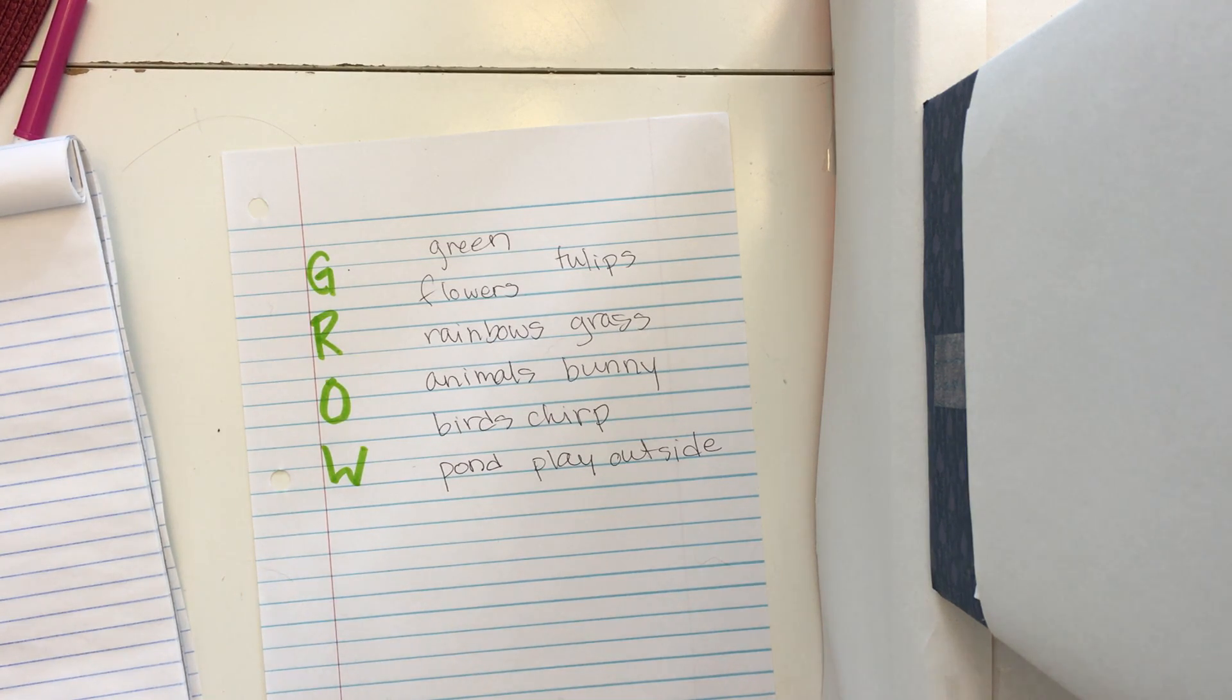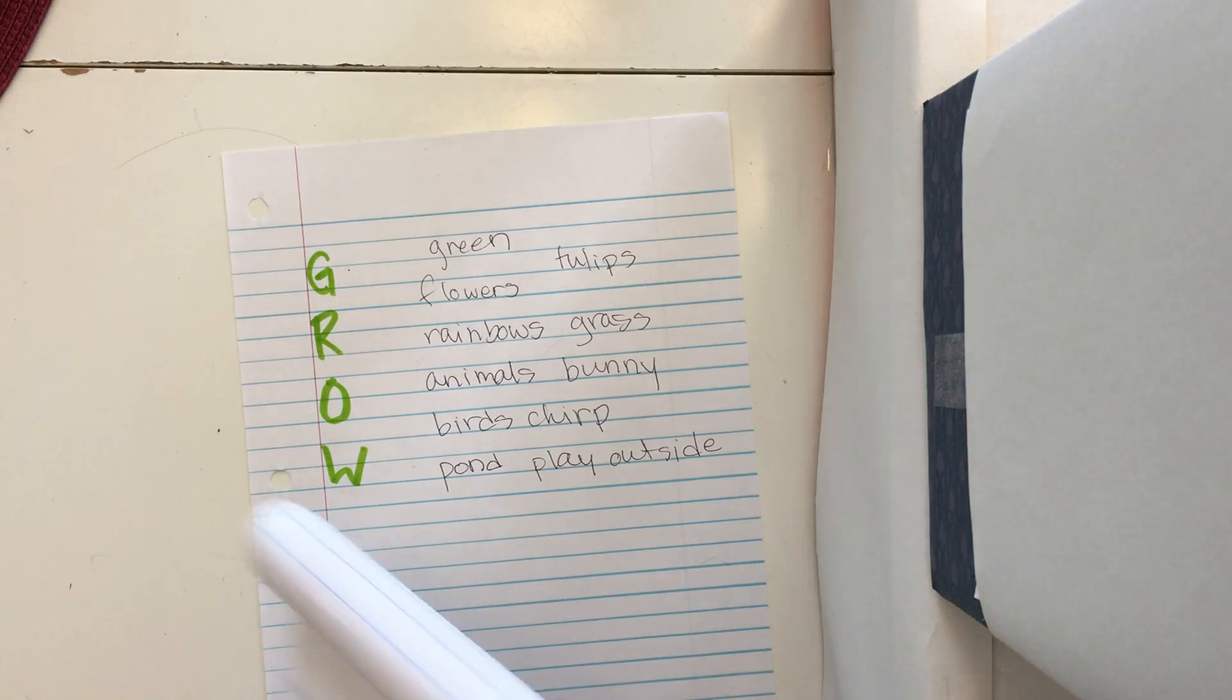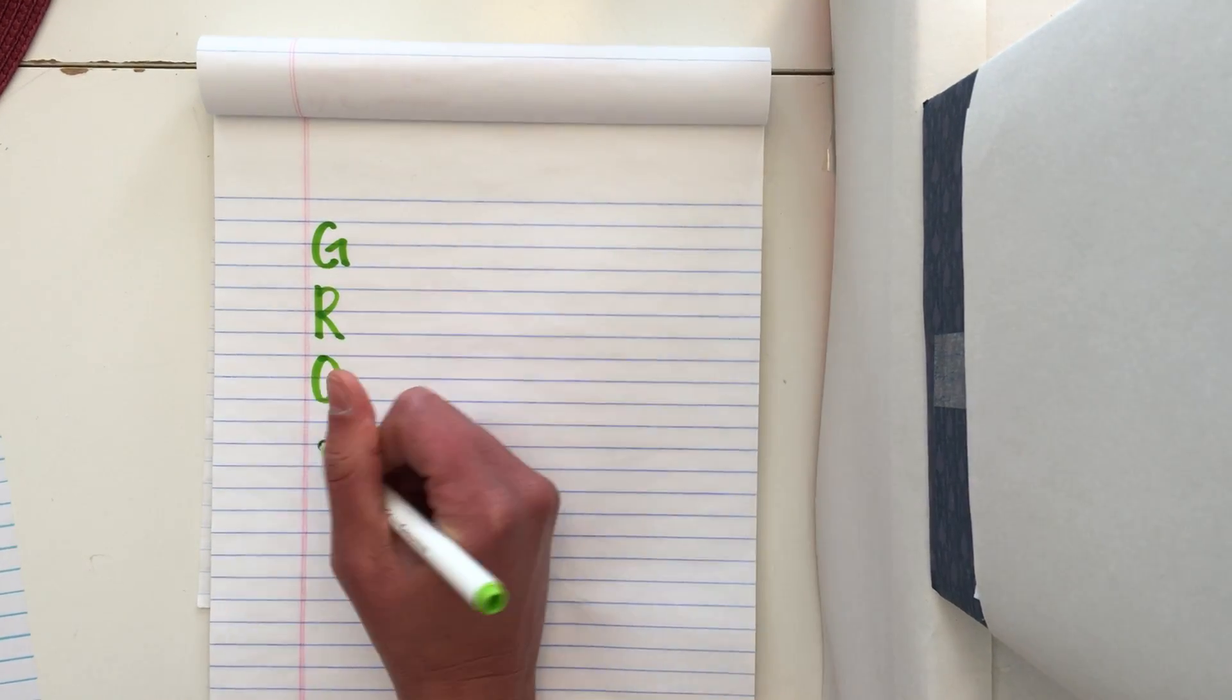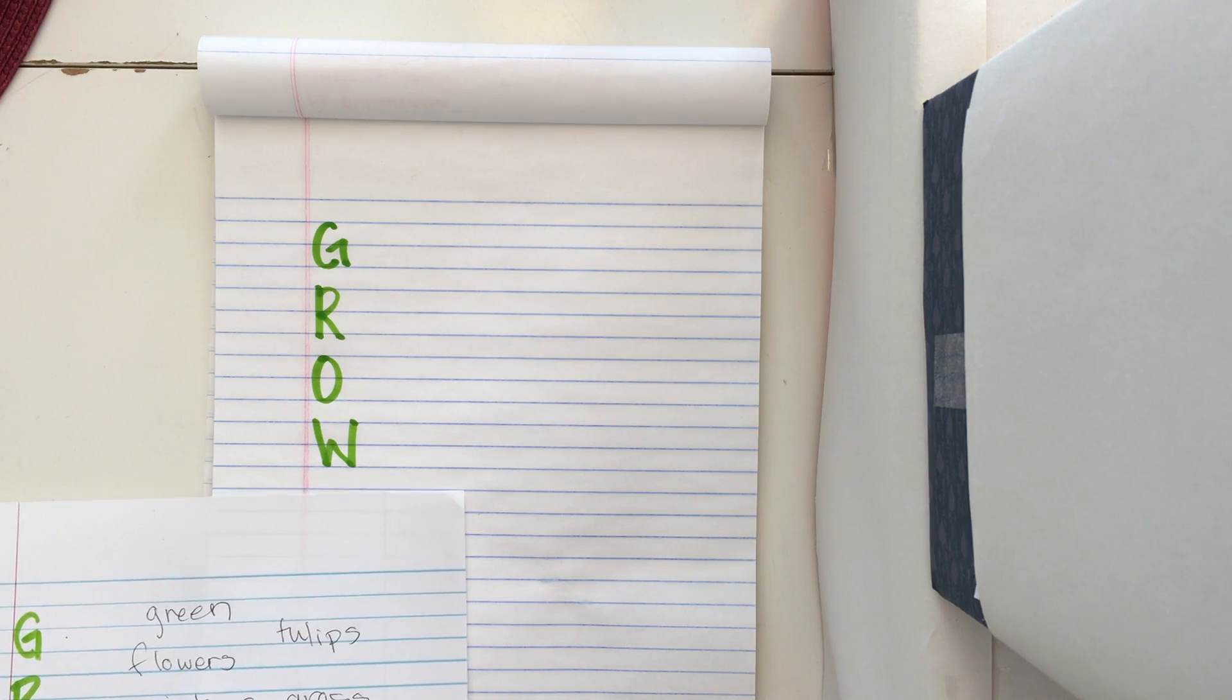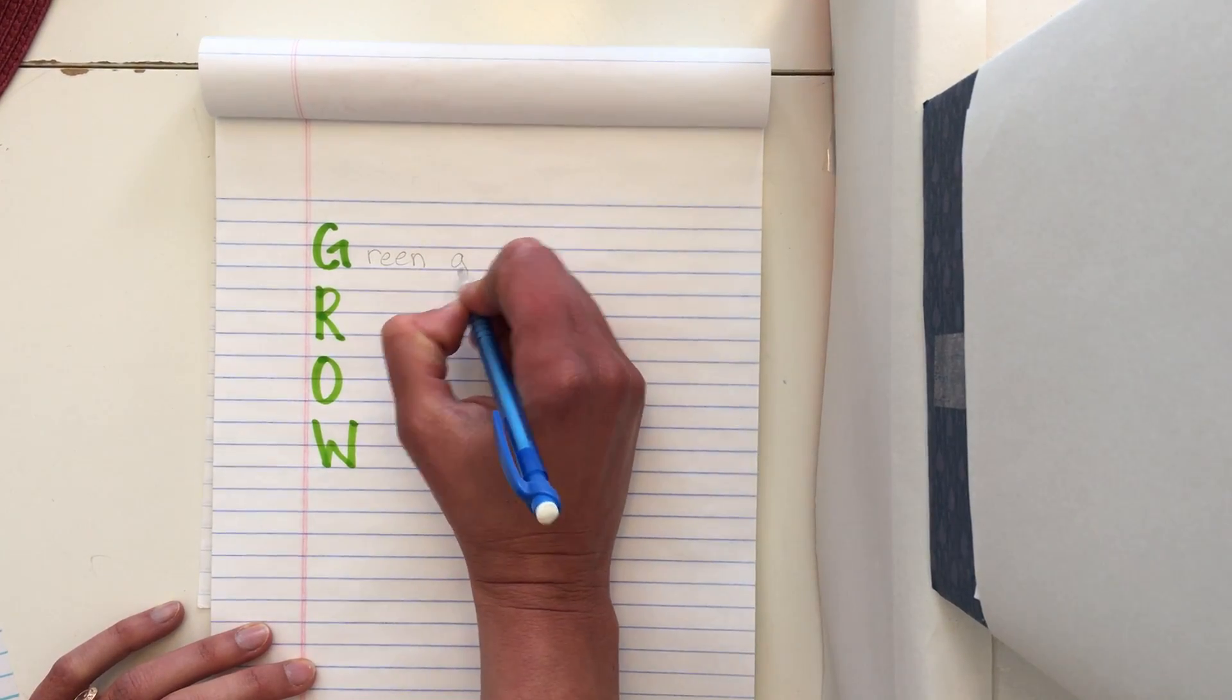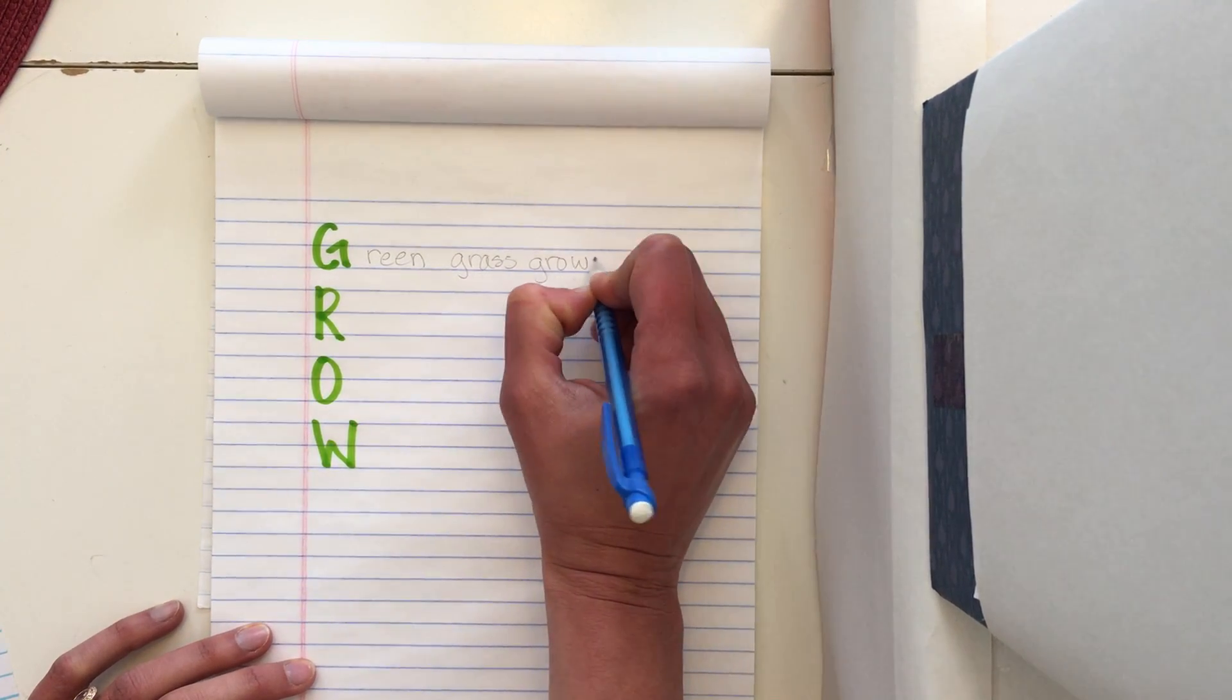Now it's time to actually do our poem with G, R, O, and W. So let's get started. I'm going to set up my paper again. And I'm going to use what I brainstormed to fill in the G, the R, the O, and the W of my acrostic poem. So in this case, for my G, some of my brainstorm started with green and grass. So why don't I do green, grass, grows tall.